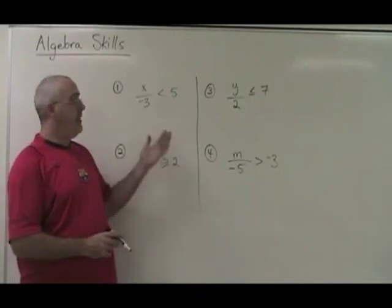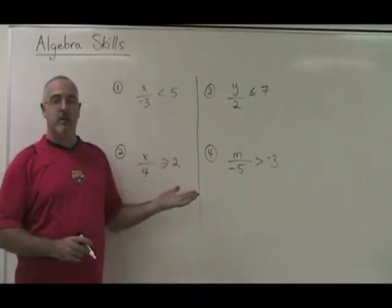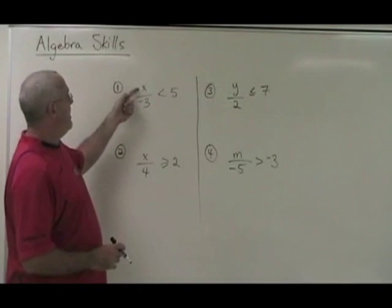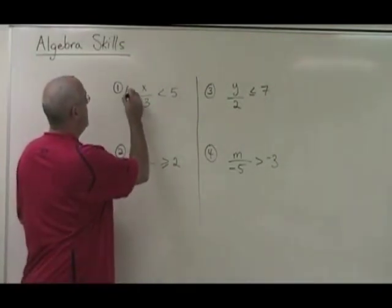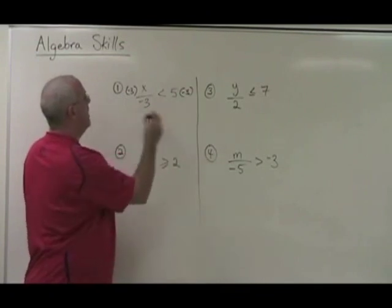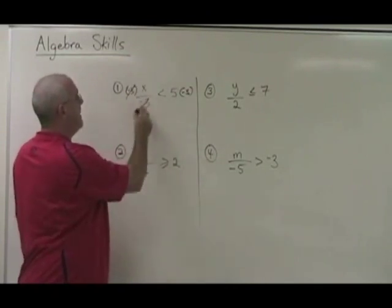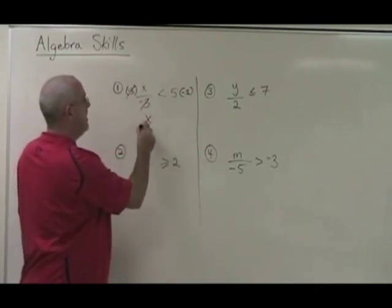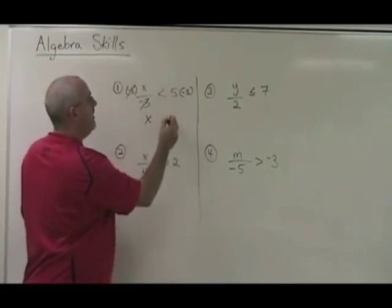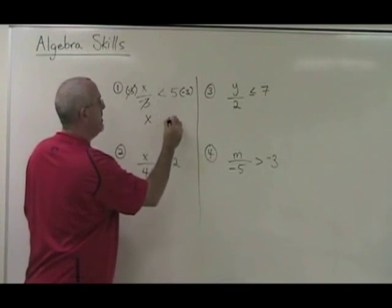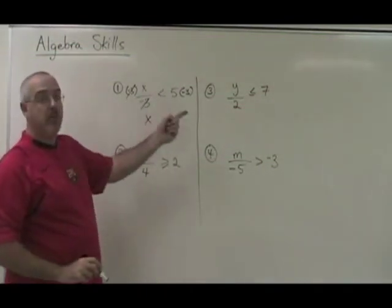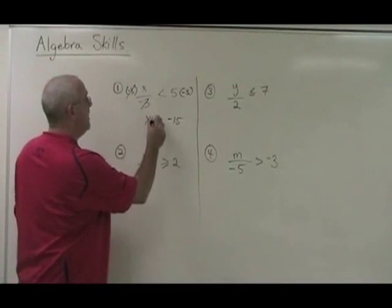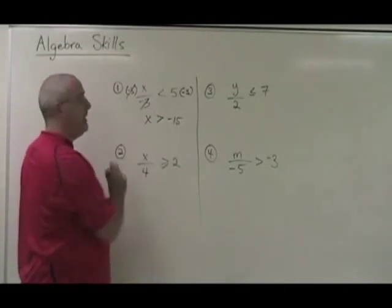And now we have a very similar set of circumstances. Here, my x is being divided by negative 3. So I have to multiply both sides by negative 3, so that these will cancel and my x is isolated. 5 times negative 3 is negative 15. But because I multiply both sides by a negative number, I have to flip the symbol backwards.